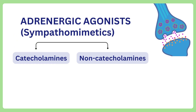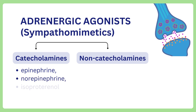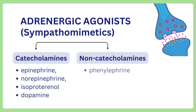Examples of catecholamines include epinephrine, norepinephrine, isoproterenol, and dopamine. Examples of non-catecholamines are phenylephrine, ephedrine, and amphetamine.